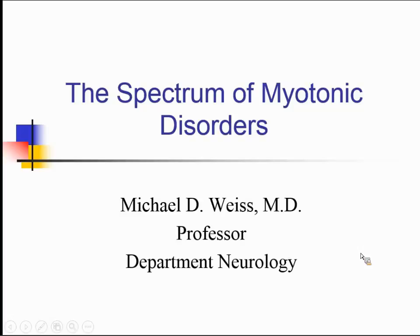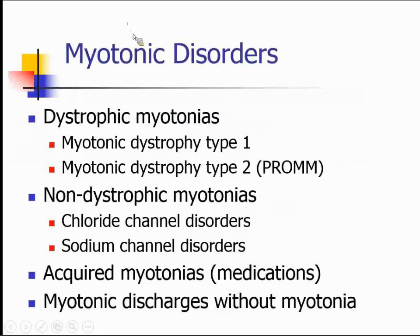I'm Michael Weiss, a neuromuscular neurologist here at the University of Washington. I'm going to talk about the spectrum of myotonic disorders today. We're going to look at disorders subdivided under the category dystrophic myotonias — that is myotonic dystrophy — and we're going to talk about type one and type two, which is also known as proximal myotonic myopathy.